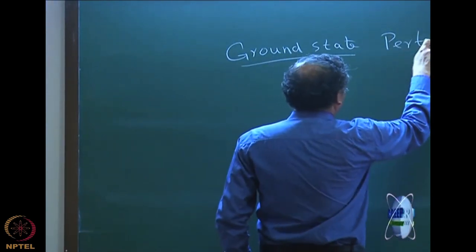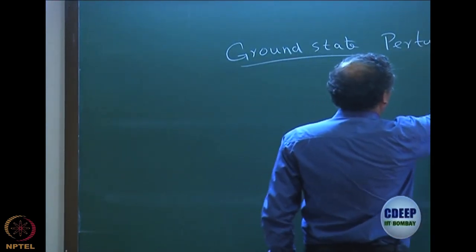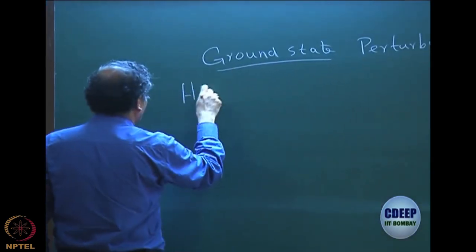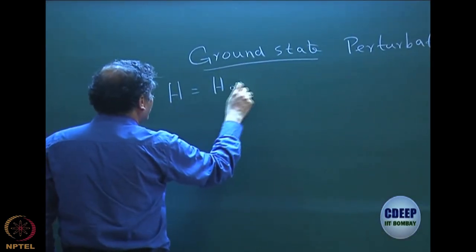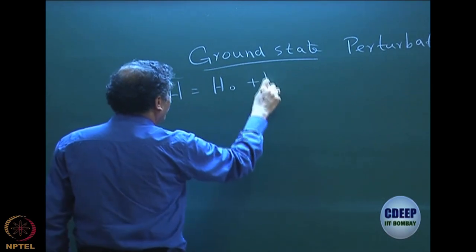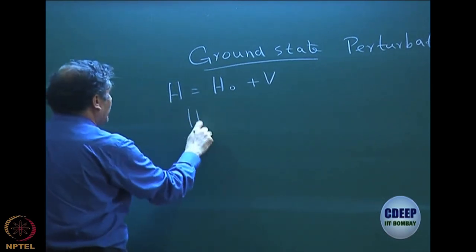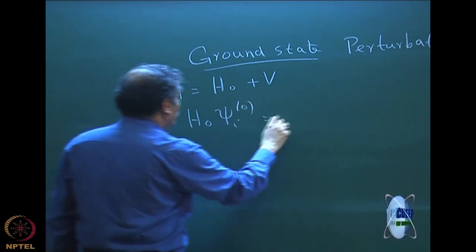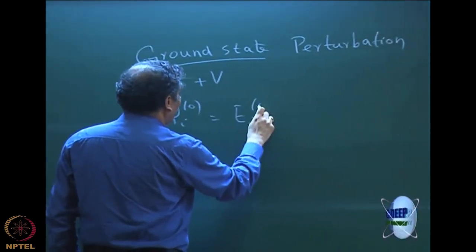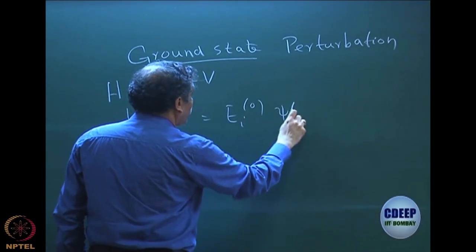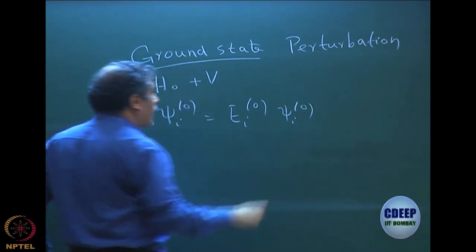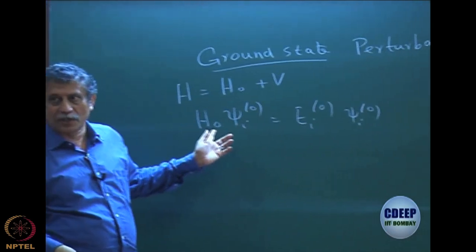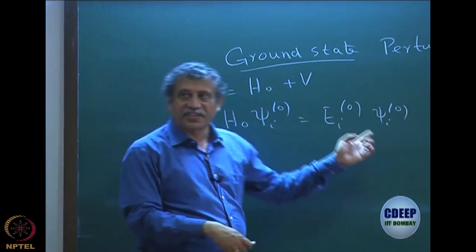I will quickly give you the formula. We had partitioned H as H0 plus V, where eigenfunction solutions of H0 were known. Wherever I am writing superscript 0, it means they are the solutions of H0, and i denotes the different states.